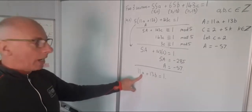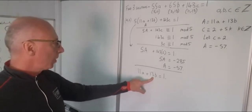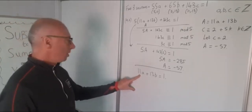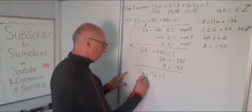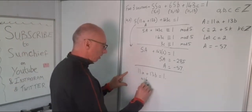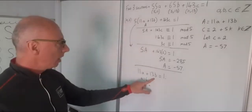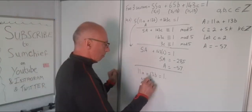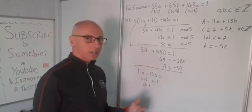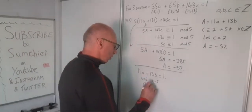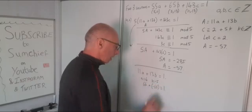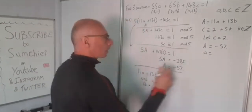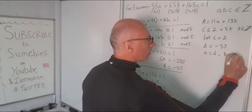I'm looking for a number to multiply 11 by which gives me one more than a multiple of 13. So if I multiply by 6, that'll give me 66. So let A equal 6 — I'll then have 66. I now need a value for B, and since A is positive, I'll need a negative B. So B equals minus 5, that'll give me minus 65. So 66 plus minus 65 equals 1. So A equals 6, B equals minus 5.